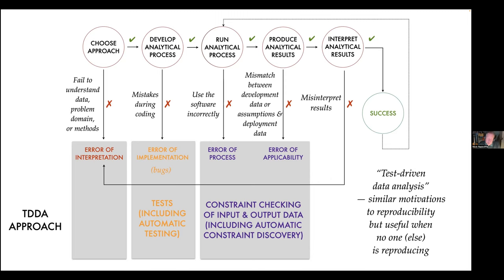What I haven't really talked about much before, or at least not systematically, is errors of interpretation. What can we do about those? Test-driven data analysis is kind of like reproducibility but comes slightly more from the software end of things. The idea is to produce stuff that's helpful even if no one's trying to reproduce your results — even if it's just you.